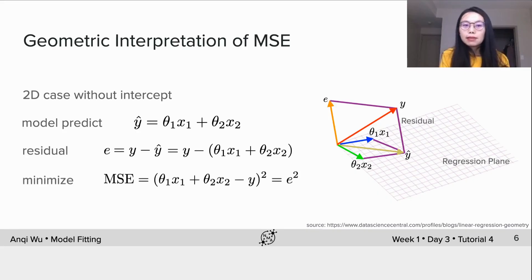Thus, minimizing MSE for this 2D linear model would be equivalent to minimizing square of the residual between y and y hat.